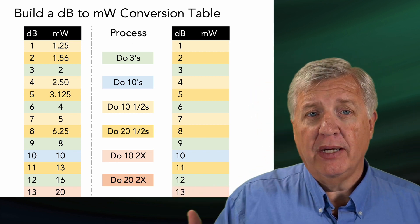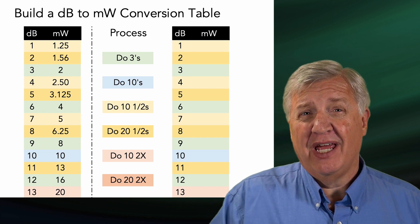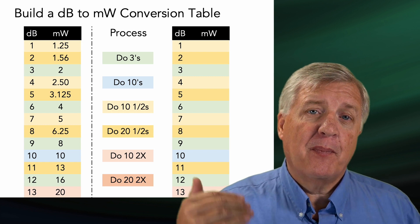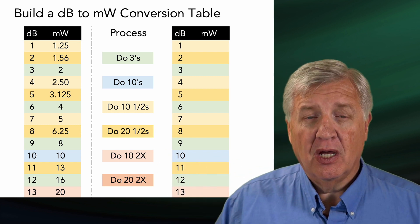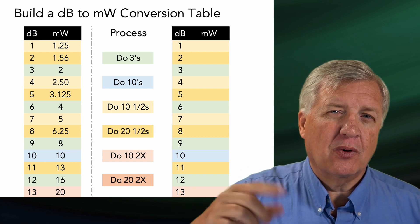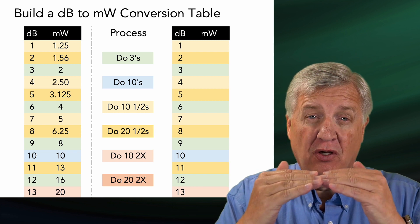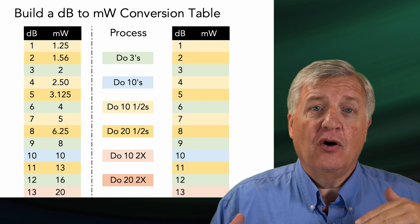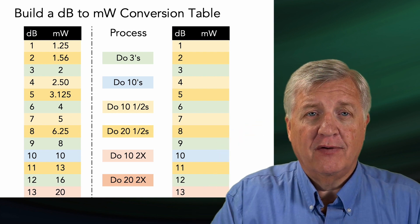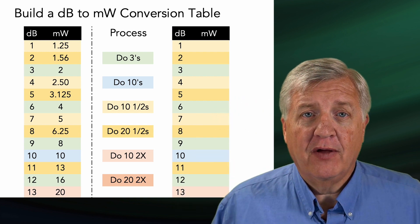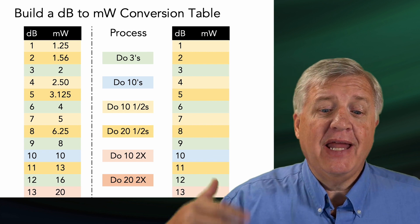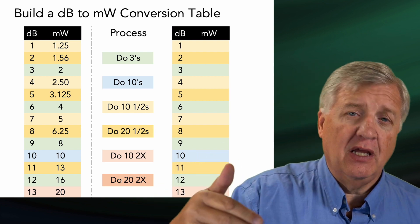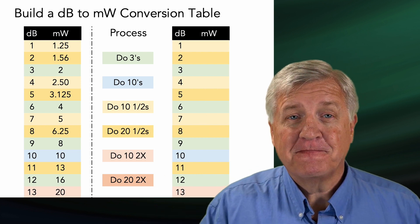Then come back and do the 10s. 10 is equal to 10. A 20 is two 10s, so that's 10 times 10, or 100. Then you do all the 10s. After that, you do the 10 halves — because if you go up by 3 you double, but going the other way you divide by 2 or half. Start at 10 and do the 10 halves: 10 minus 3 goes to 7, which is 5. From 7 minus 3 goes to 4, which is 2.5. From 4 minus 3 goes to 1, which is 1.25. Then you do the 20 halves: 20 minus 3 is 17, which is half of 100, so 50. You fill them all in and eventually you complete the whole chart.